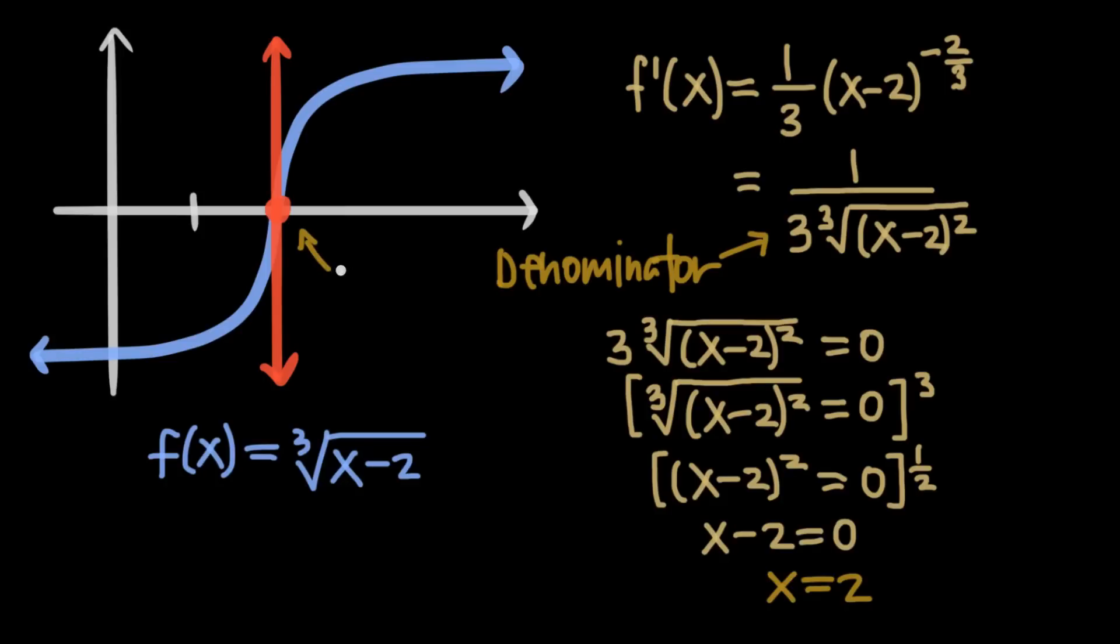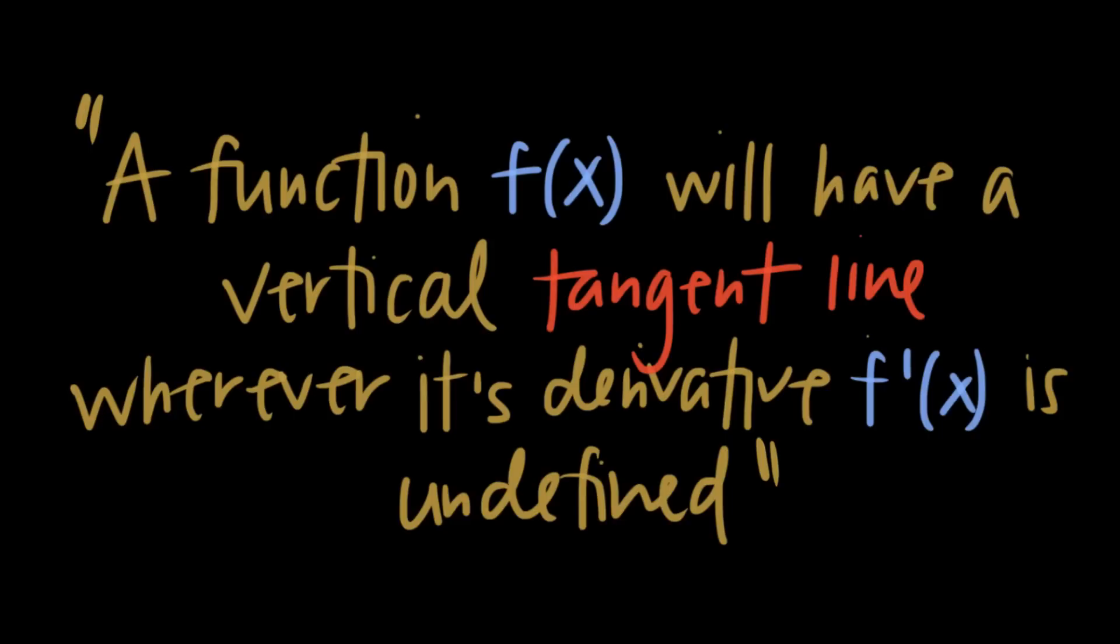So the graph of f has a vertical tangent line at x equals 2, which means that it's parallel to the y-axis. So a continuous function will have a vertical tangent line anywhere where its derivative is undefined.